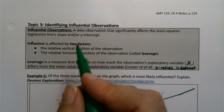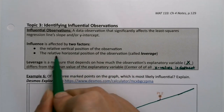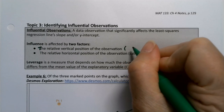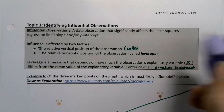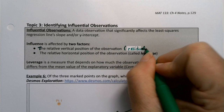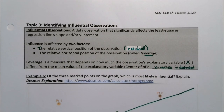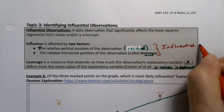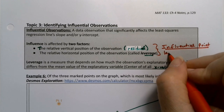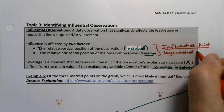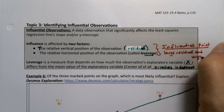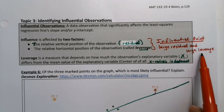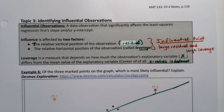Going back to the definition: influential observations are affected by two factors — the relative vertical position and the relative horizontal position. An influential point will have a large residual, from the relative vertical position, and large leverage, from the relative horizontal position. It will be far away in the x direction, which is the leverage part, and far away from the trend line, which is the large residual part.